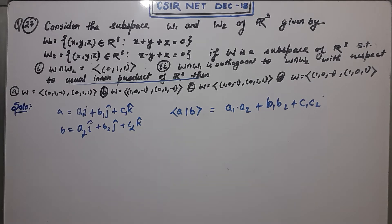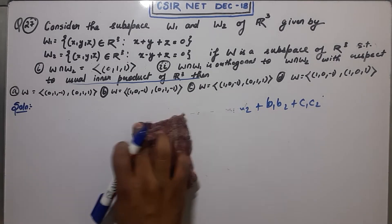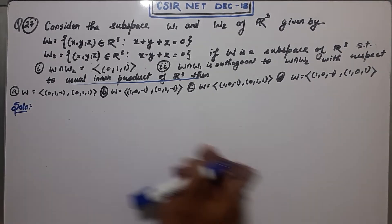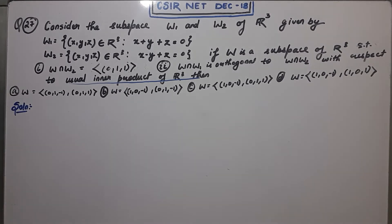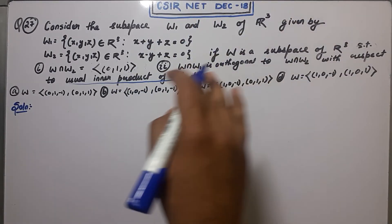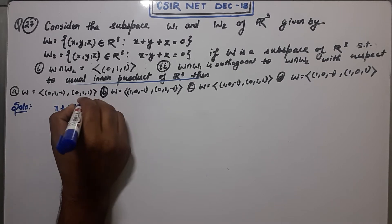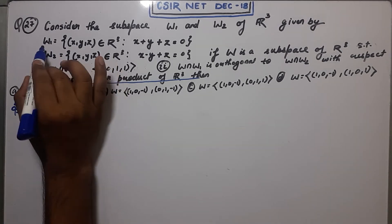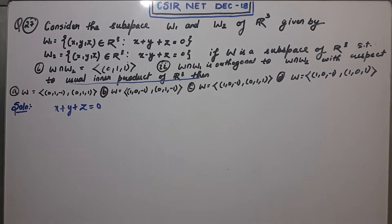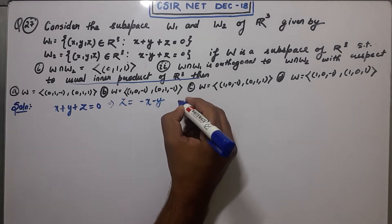I have written it in the form of i, j, k so you can relate it to the 12th class definition of vectors. Now, back to the question: W satisfies condition one and condition two, and you have to find out which of the four options is your W. First, I will explicitly write down what W1 is. Any vector in W1 must satisfy x plus y plus z equals zero.